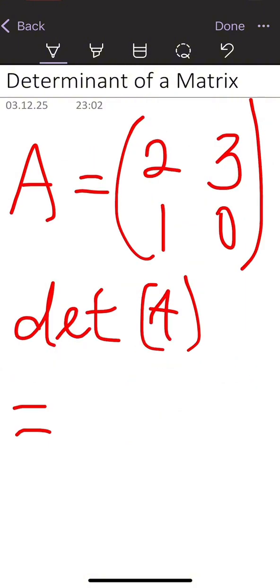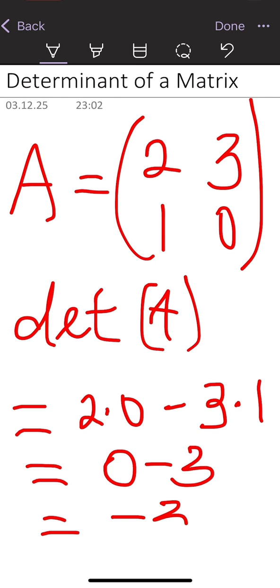Pick the first diagonal, that is two times zero, minus the second diagonal, three times one. This becomes zero minus three, and this gives us minus three.